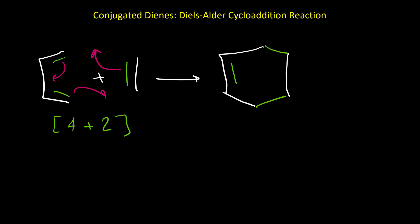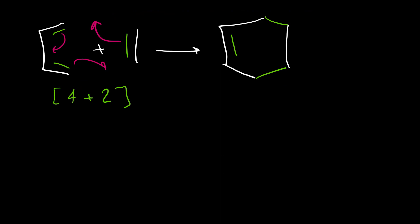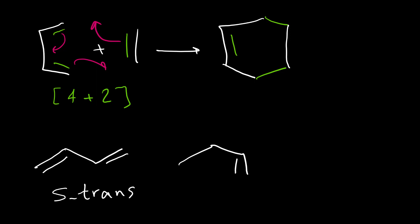In this type of reaction, the conformation of the conjugated diene is very important. We have two different conformations for dienes. The more stable conformation is called S-trans, and the other is S-cis. In Diels-Alder reaction, only the S-cis conformation can react. So S-trans is more stable, but during this reaction the diene must adopt the S-cis conformation. If a structure cannot convert to S-cis, we don't have any Diels-Alder reaction for that compound.